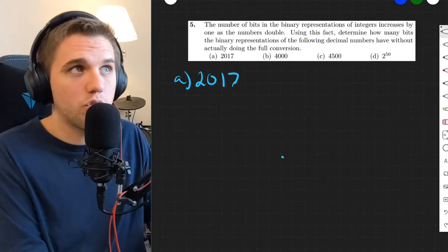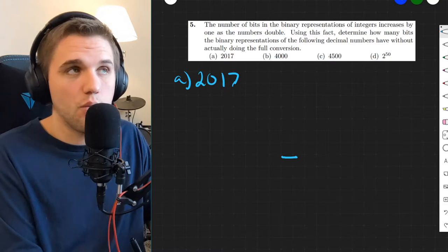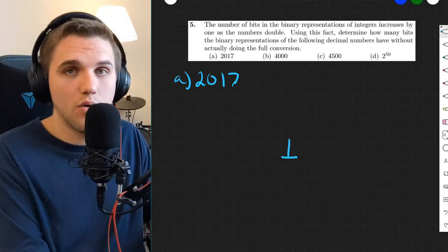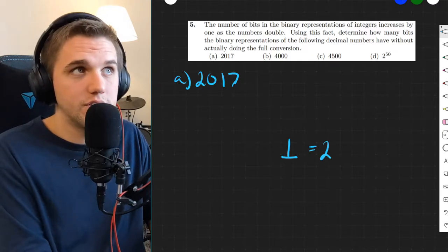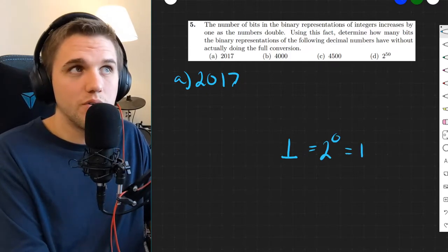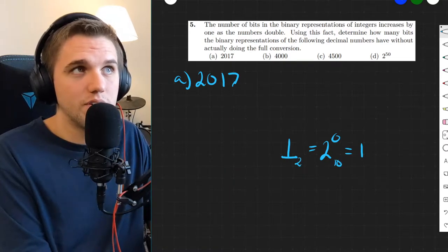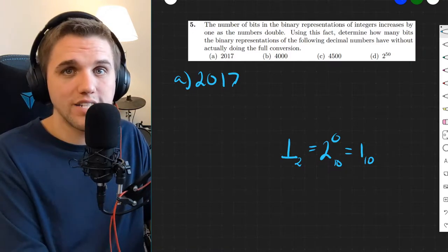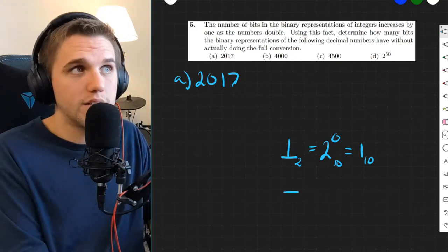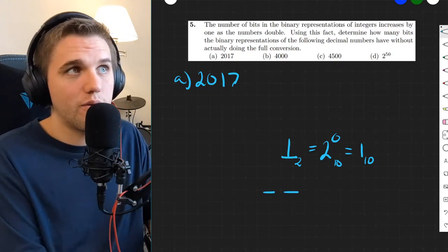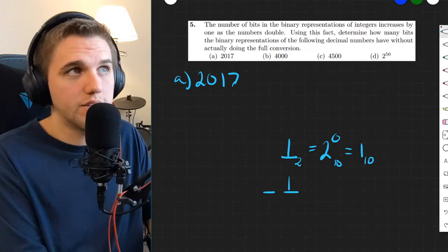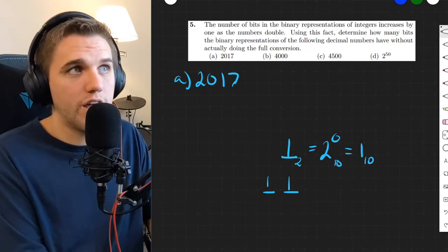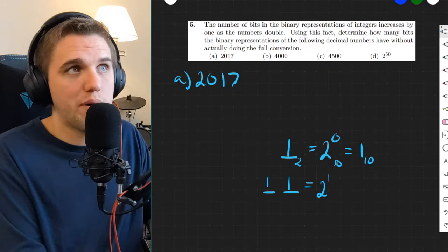To answer this question, let's start with one bit. How high of a number can we get with just one bit? Two to the power of zero is one, so with one bit we can go as high as the value one. What about two bits? The largest binary number we can create with two bits is if we had both entries as one, which in base 10 is two to the power of one plus two to the power of zero, which is three.